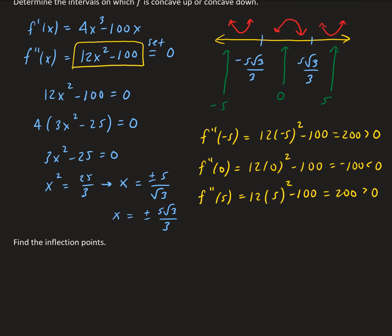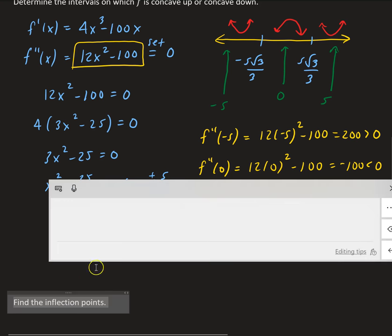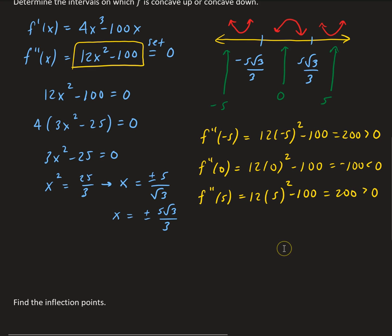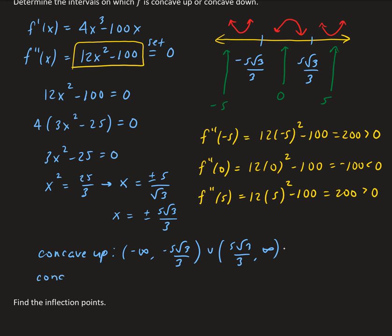We can summarize the concavity results. The function is concave up from negative infinity to negative 5 root 3 over 3, and from positive 5 root 3 over 3 to infinity. It is concave down between negative 5 root 3 over 3 and positive 5 root 3 over 3. When writing these intervals, always go from left to right.